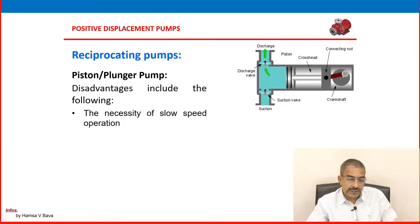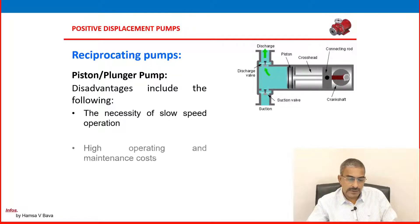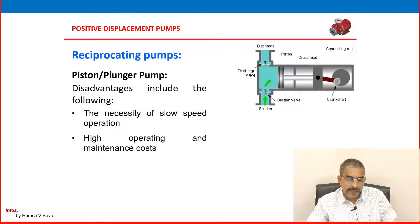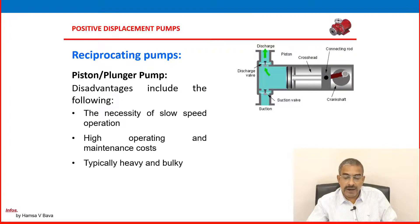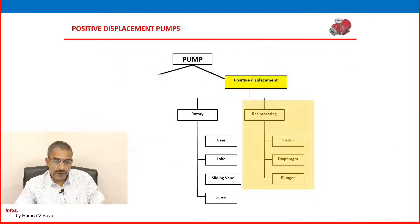Disadvantages of piston and plunger pumps include the necessity of slow speed operation, high operating and maintenance costs, and being typically heavy and bulky.